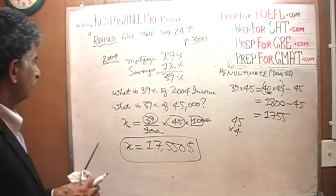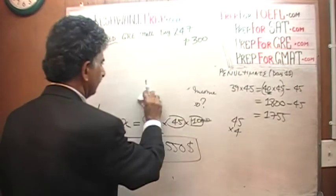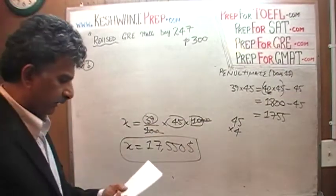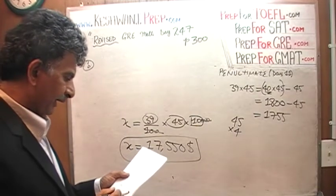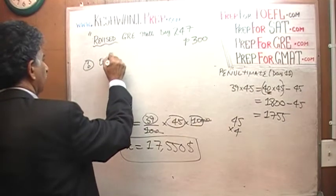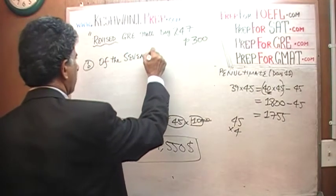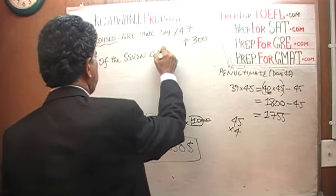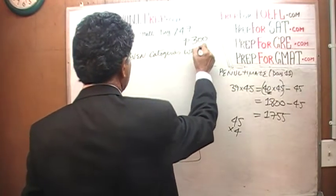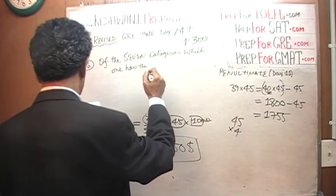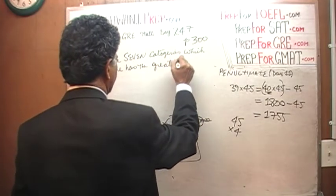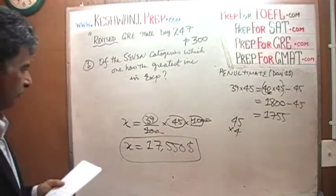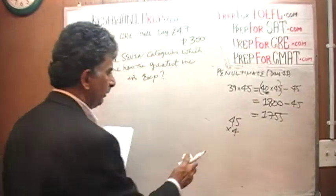Let's do part B. In part B they are asking us, of the seven categories, which one has greatest increase in expenditure? Of the seven categories, which one has the greatest increase in expenditure? Well, let's find out, shall we? Which one? We're going to just go one by one until we find something that works.